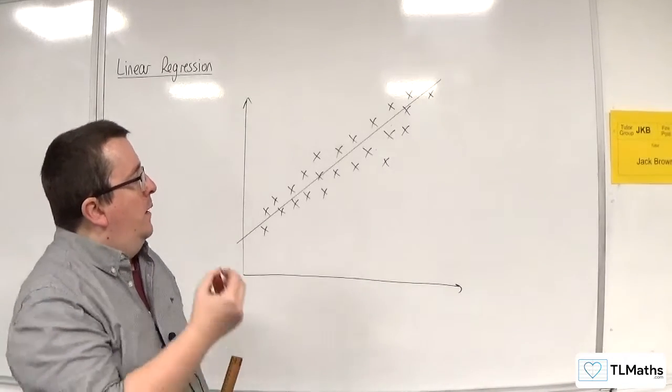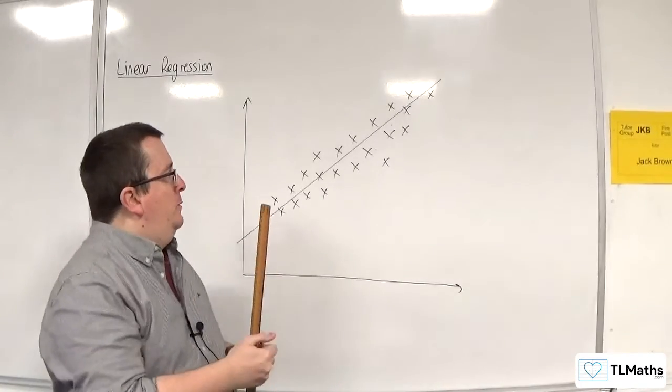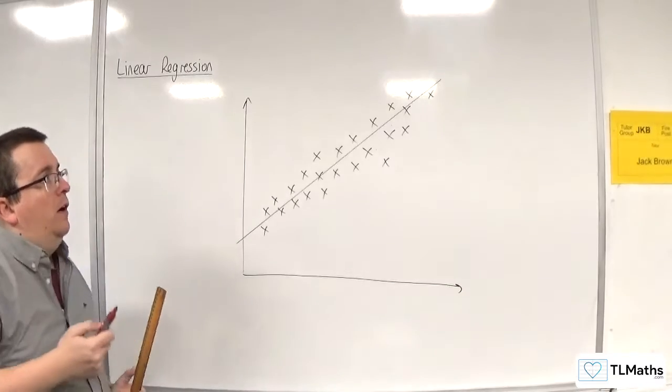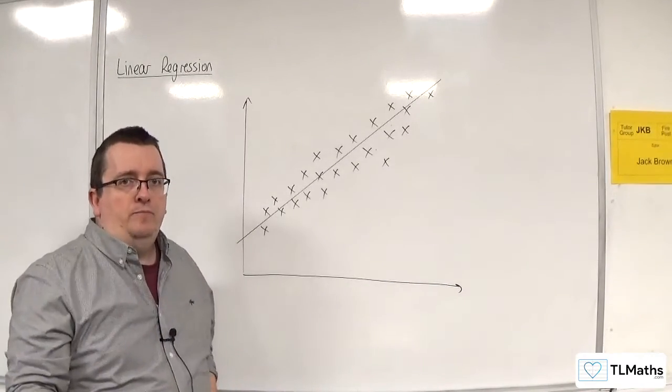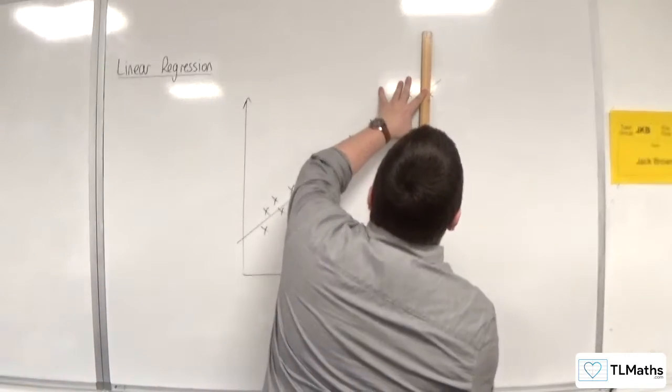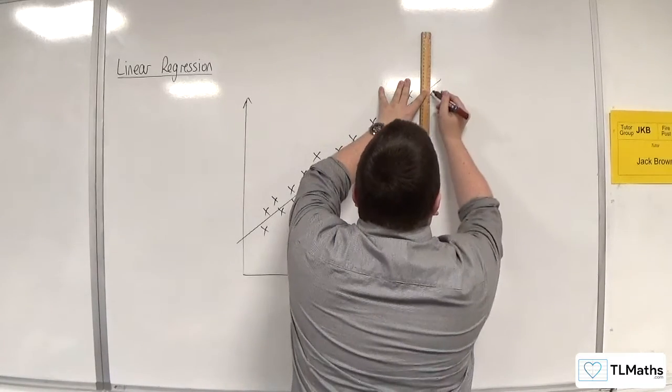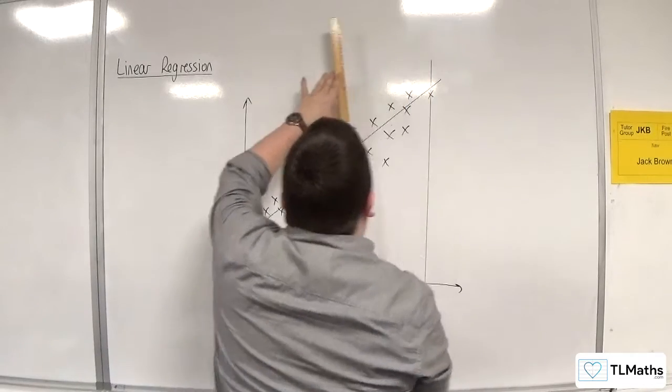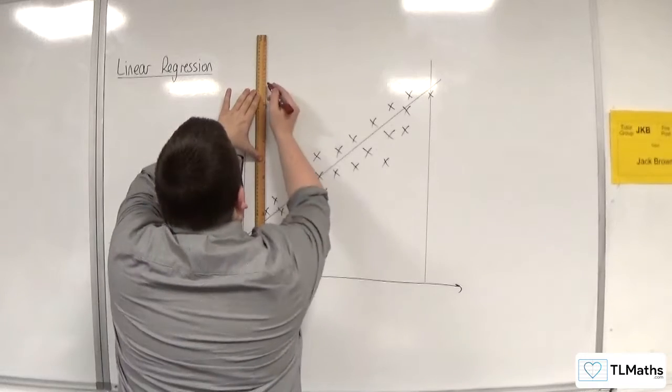And by that, I mean which X values you're using to predict your Y values. So remember, the data points are showing you the data that has been collected. So I can only really use any X values up to the last data point that is collected on the right, and down to the last data point that is collected on the left.